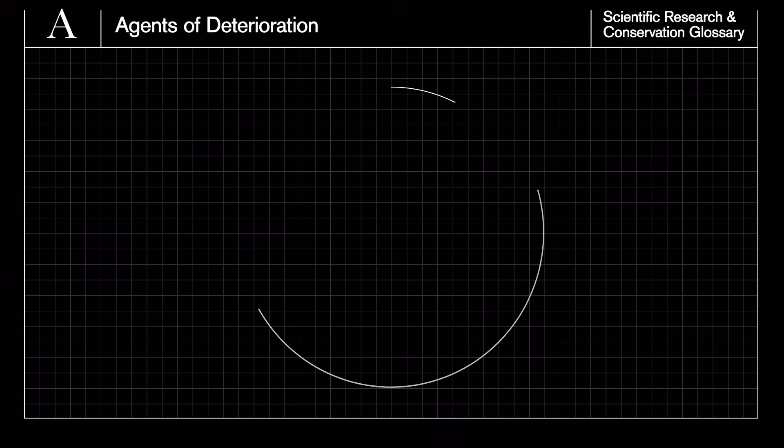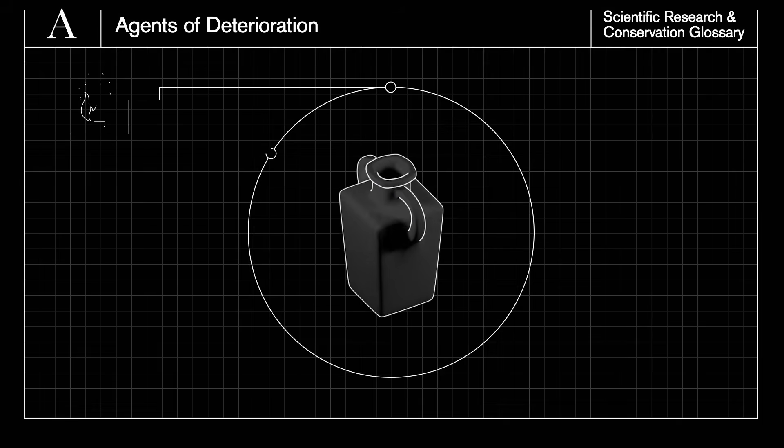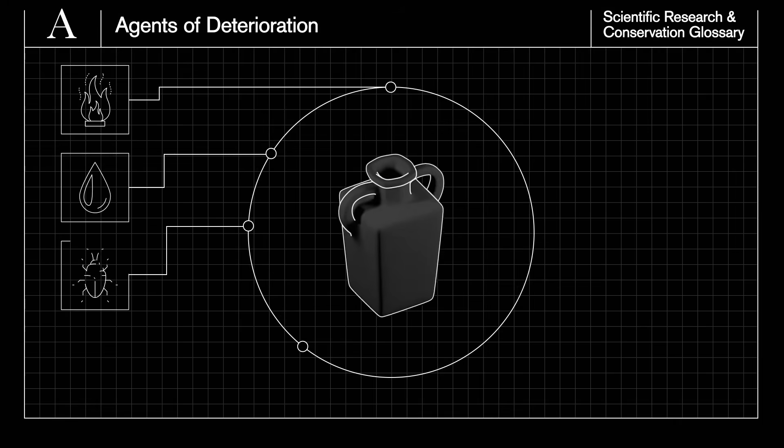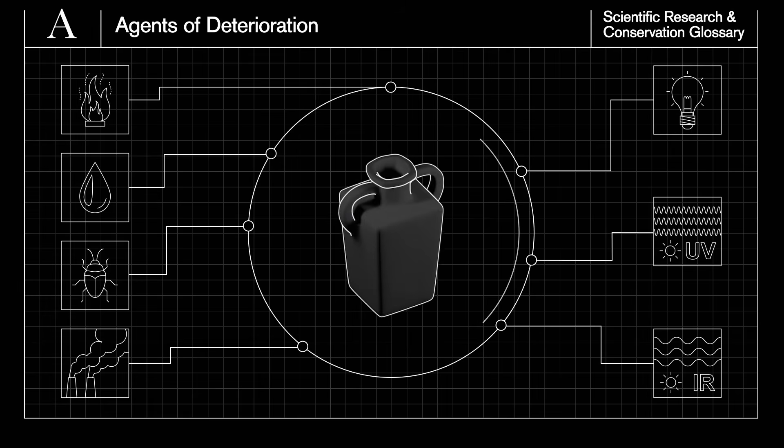Agents of deterioration are threats posed to the museum's collections. These include fire, water, pests, pollutants and light, ultraviolet and infrared, among others.